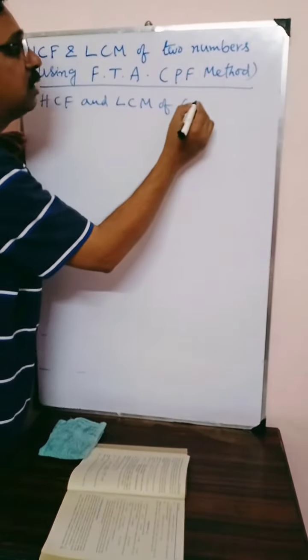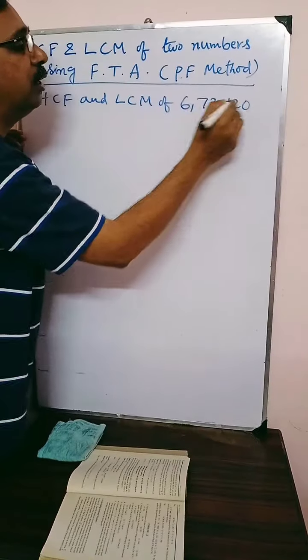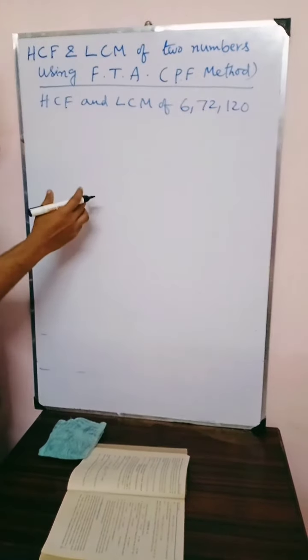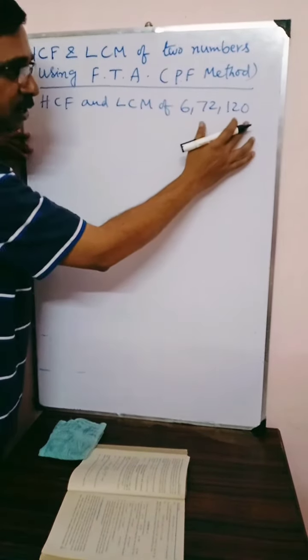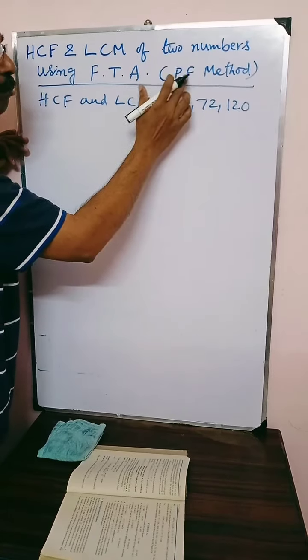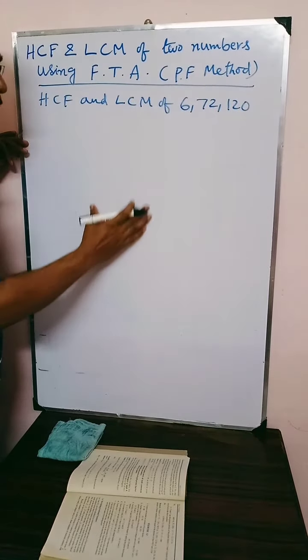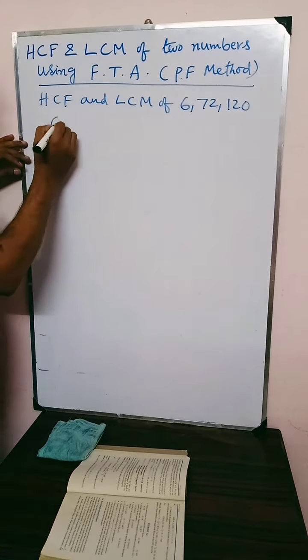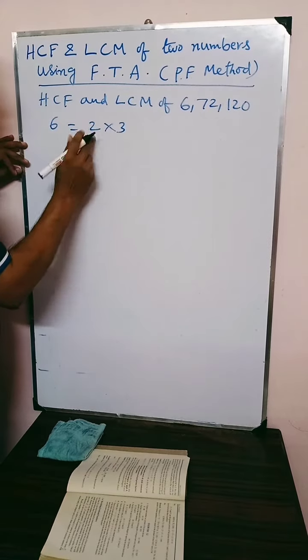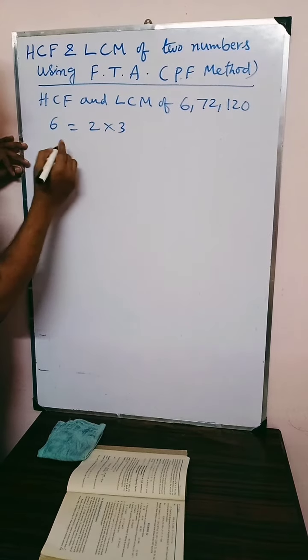Now we shall find the HCF and LCM of 6, 72 and 120. We are taking 3 numbers. For each of these 3 numbers, we shall find the prime factorization. 6 equals 2 into 3. This is the prime factorization of 6.